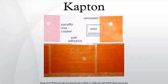Kapton is a polyamide film developed by DuPont that remains stable across a wide range of temperatures, from -269 to +400 degrees Celsius. Kapton is used in, among other things, flexible printed circuits and thermal micrometeoroid garments.